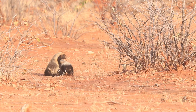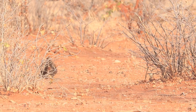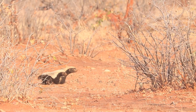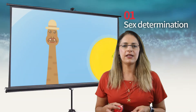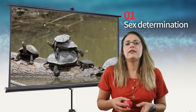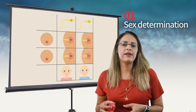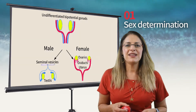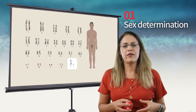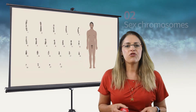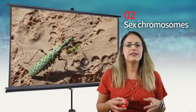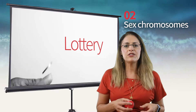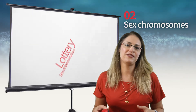Sex determination is one of the most diverse and evolutionarily flexible aspects of sexual reproduction. We will start this chapter by describing the wide range of mechanisms that determine whether an individual will develop into a female or a male — mechanisms that can be chromosomal or environmental. Sex chromosomes and their linked heredity are fascinating subjects that will be covered in the text you will read after watching the first video.